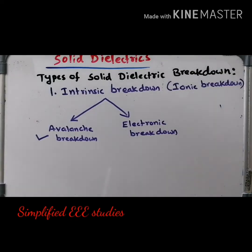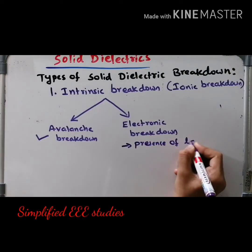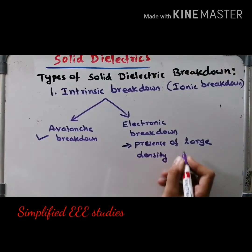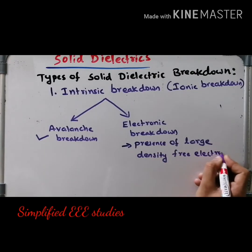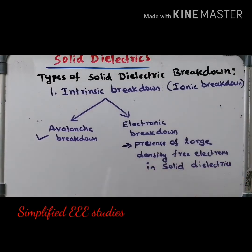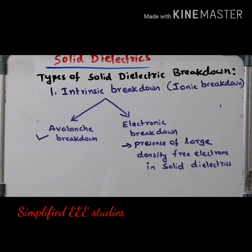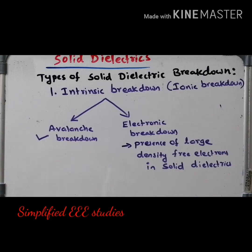The next one is called electronic breakdown. The main reason for electronic breakdown is the presence of high density or large density free electrons in solid dielectrics. Whenever you are applying high voltage, the large density free electrons get collided, resulting in the formation of a special conductive path. If the solid dielectric material has a special conductive path, its property has been degraded, resulting in dielectric breakdown. This phenomenon is known as electronic breakdown.